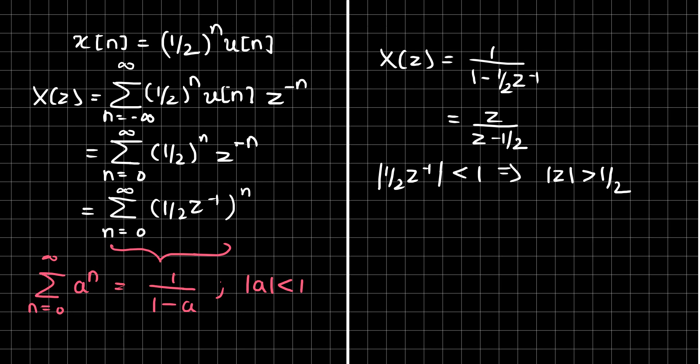Now this condition of mod of z being greater than 1 by 2 is dependent for the convergence of this Z-transform, and hence the condition or the region of convergence for this example is given by mod of z greater than 1 by 2.